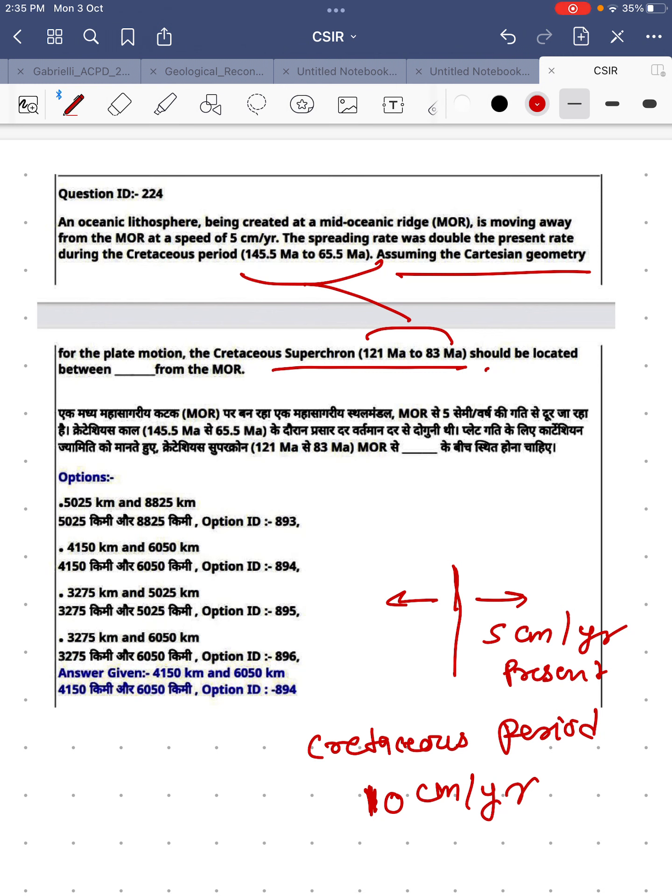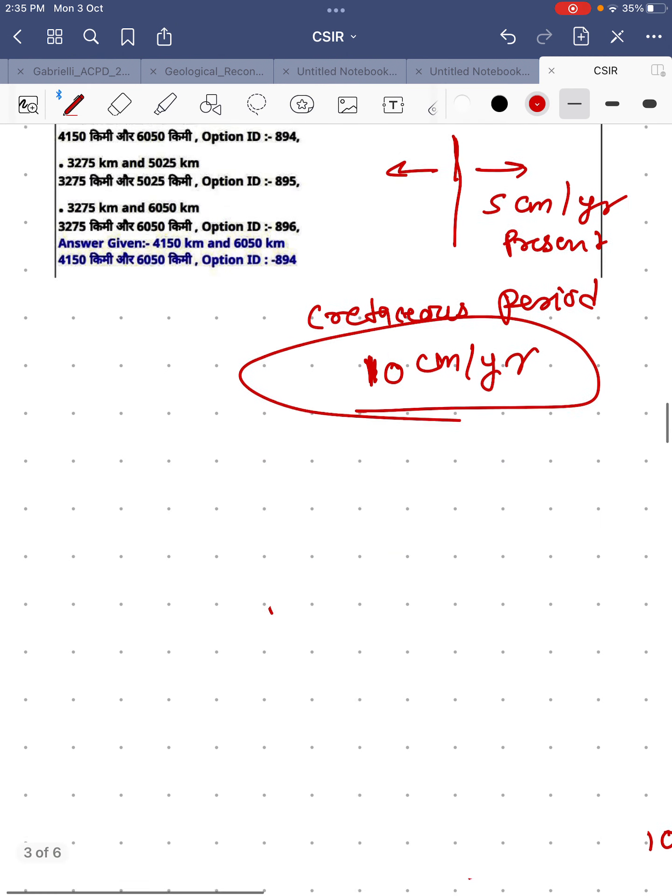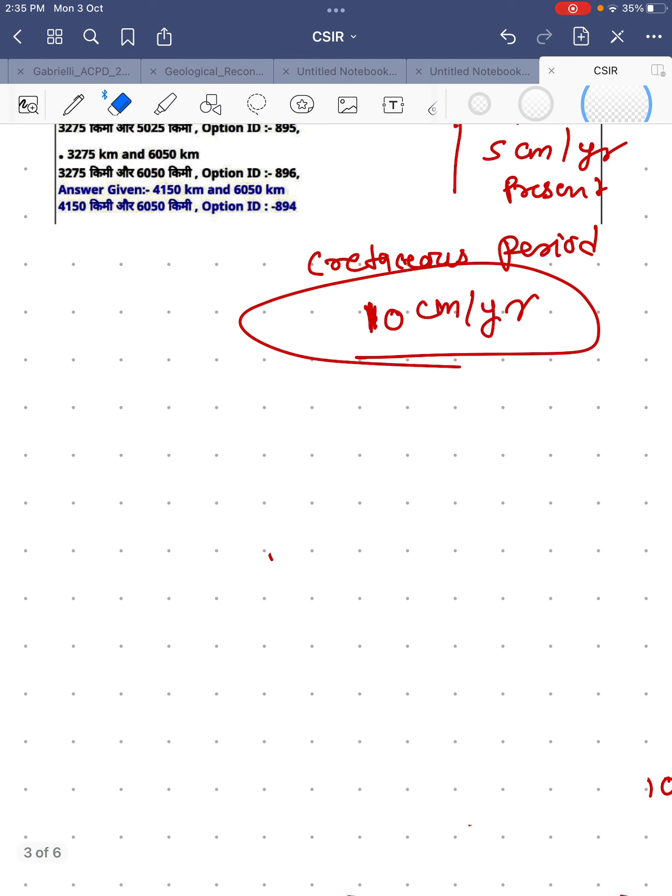So if you see carefully, last time I used 5 centimeters which is the present moving rate. Since they are asking about the Cretaceous superchron and this Cretaceous superchron belongs to this Cretaceous period, I should have used 10 centimeters per year, not 5 centimeters per year.